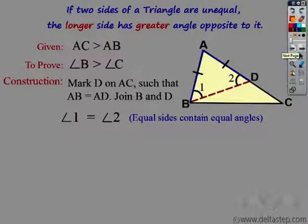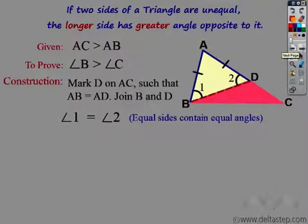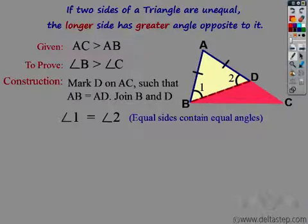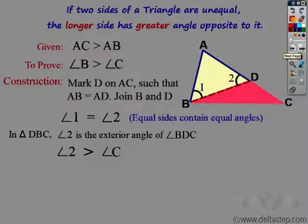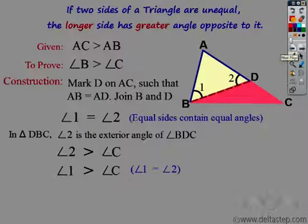Now, isn't angle 2 an exterior angle to triangle BDC? We have triangle BDC, and angle 2 is an exterior angle of triangle BDC. We know that an exterior angle equals the sum of the two interior opposite angles. So angle 2 equals angle C plus angle x. Hence we can say that angle 2 is greater than angle C.